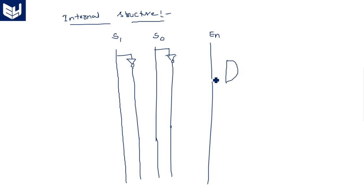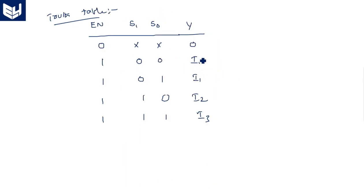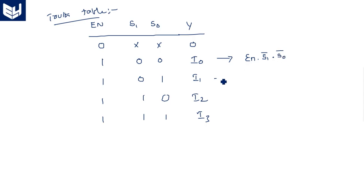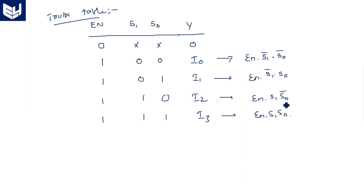When Y equals I0, S1 and S0 are both 0 and enable equals 1. The Boolean expression is: Y = I0 · enable · S1_bar · S0_bar. Similarly for I1: enable · S1_bar · S0. For I2: enable · S1 · S0_bar. For I3: enable · S1 · S0. These are the AND gate expressions for each input line.